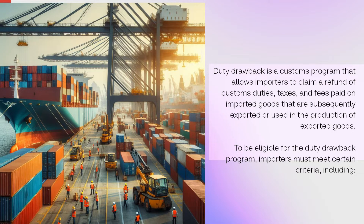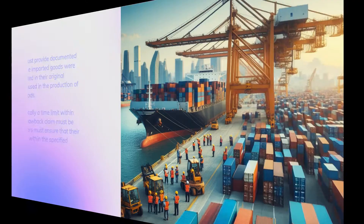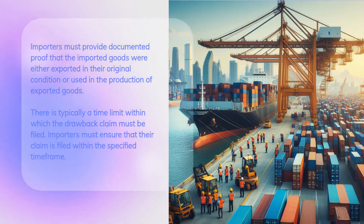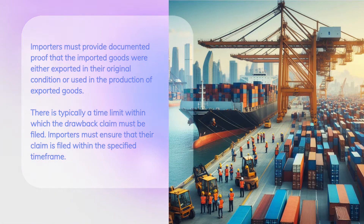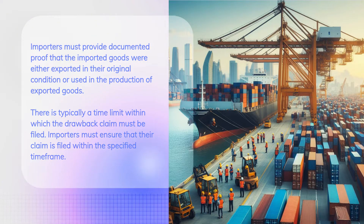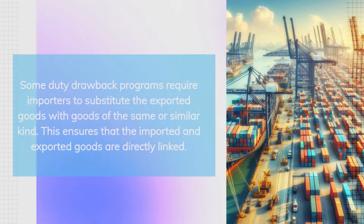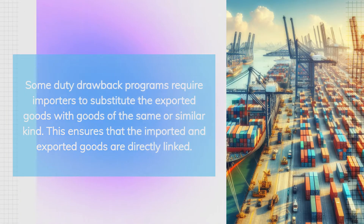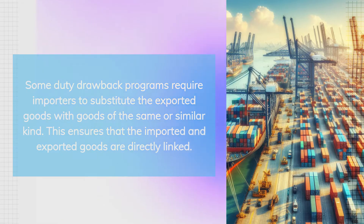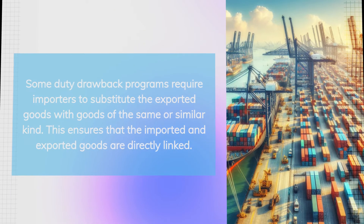To be eligible for the duty drawback program, importers must meet certain criteria. Importers must provide documented proof that the imported goods were either exported in their original condition or used in the production of exported goods. There is typically a time limit within which the drawback claim must be filed, and importers must ensure that their claim is filed within the specified time frame. Some duty drawback programs require importers to substitute the exported goods with goods of the same or similar kind, ensuring that the imported and exported goods are directly linked.